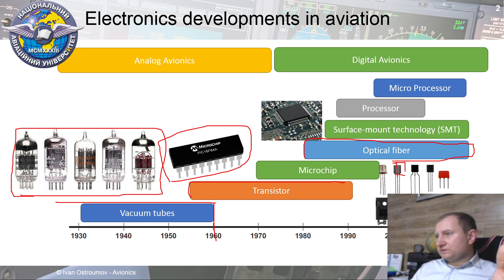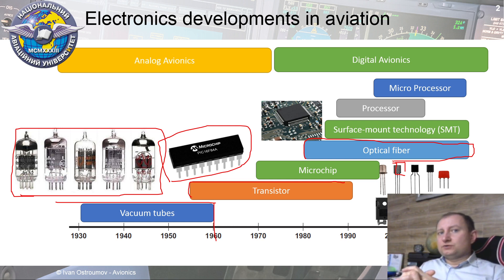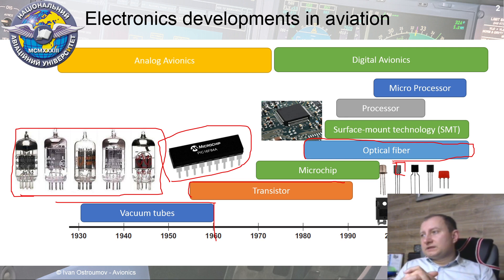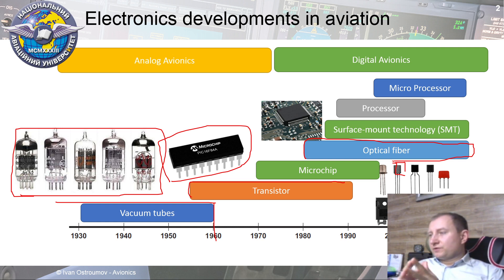Optical fiber was invented much earlier, however on board of aircraft the first experiments took place during this period. Therefore optical fiber and optical devices were placed on board of aircraft — including optical fiber and probably laser gyros for measuring particular parameters of the aircraft or for transferring data.